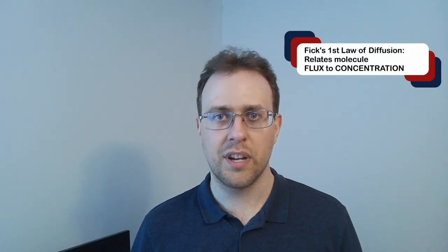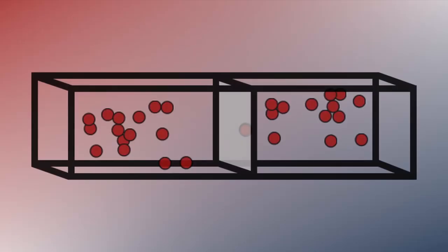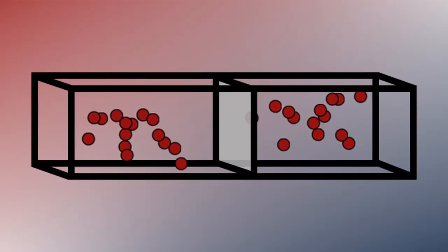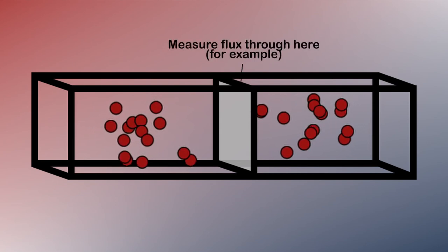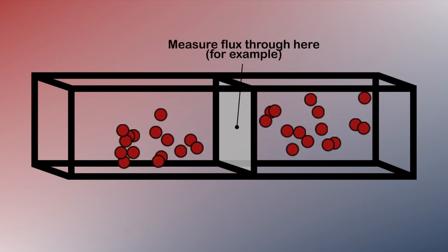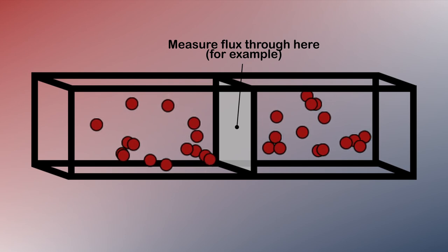Fick's first law of diffusion relates the flux of a molecule to its concentration. The flux is how much of the molecule is passing through an area over some time. Imagine drawing a square inside a fluid container. The flux corresponds to the net number of molecules that pass through the square per time interval. So the units for flux are molecule quantity per area, so distance squared, per time.